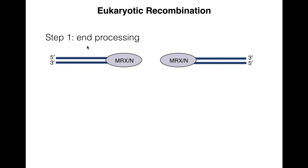Now, eukaryotic recombination. The steps are about the same: resection of the five-prime end of the break, strand invasion and synthesis, second end capture, synthesis and ligation, and then resolution of the double Holliday junction, just as in the double-strand break repair model described in the previous lecture.